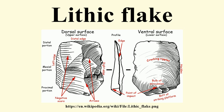A bending initiation results when a flake initiates not at the point where the force was applied, but rather further away from the edge of the core, resulting in a flake with no hertzian cone or bulb of applied force and few if any of the characteristic ripples or undulations seen on the ventral surface of conchoidally produced flakes.